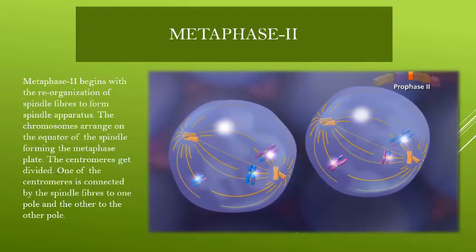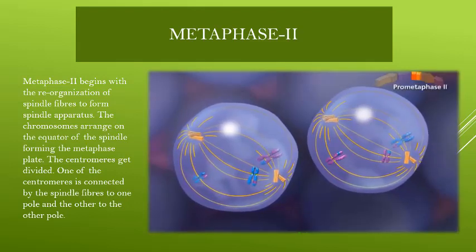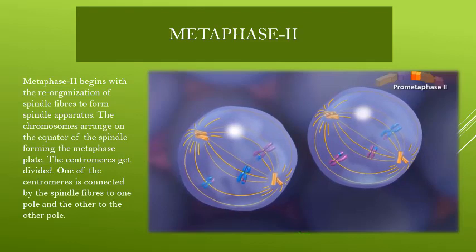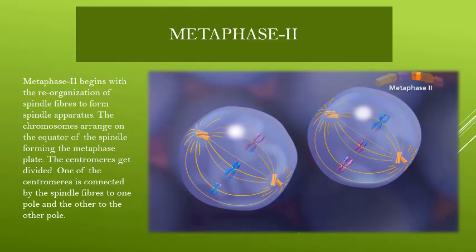In Metaphase II, the spindle apparatus starts to form. The chromosomes are arranged towards the equator to form a metaphase plate, and spindle fibers attach to their centromeres. The centromere is divided here so that in the next stage the sister chromatids will be separated.